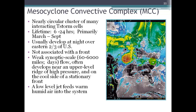MCCs are not associated with a front but are associated with weak synoptic-scale flow — synoptic scale being 60 to 6,000 miles, lasting on the order of days, like a stationary front. They often develop near an upper-level ridge of high pressure on the cool side of a stationary front, with a low-level jet feeding warm, humid air into the system. Here you see a satellite and radar image showing an MCC over the central United States, with its circular formation and intense thunderstorm activity shown in red.